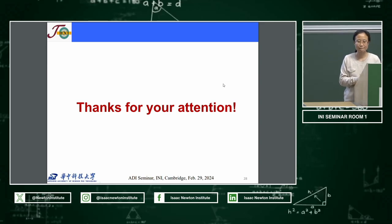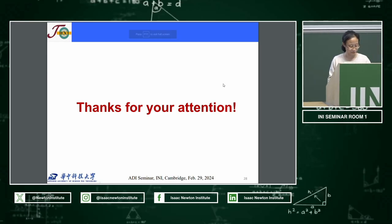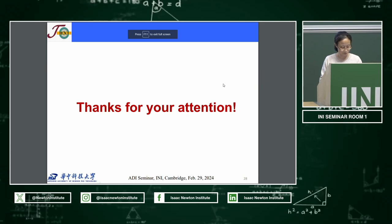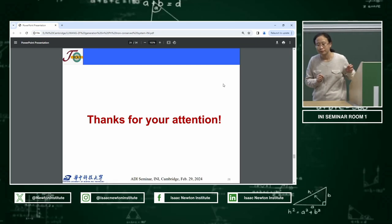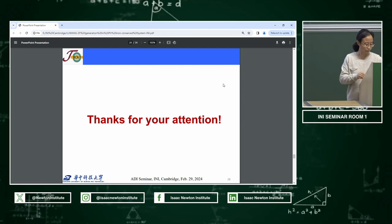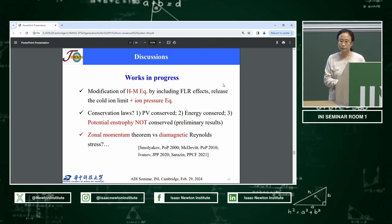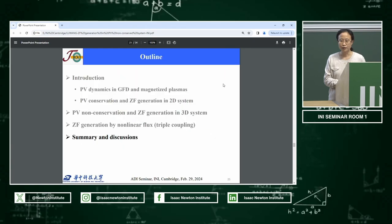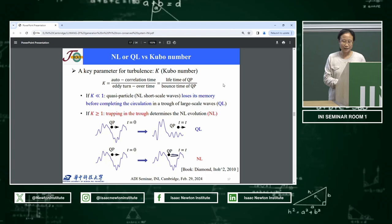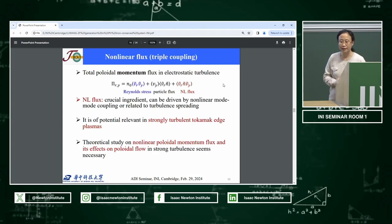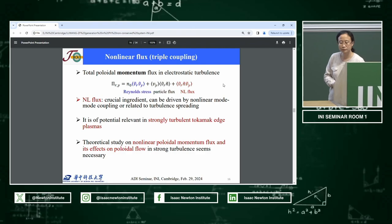Questions and discussion. An audience member observes that both additional terms in the poloidal momentum flux — different from the Reynolds stress — seem related to density fluctuations: one is the particle flux multiplied by v-theta, the other involves three-point correlations with density. The question is raised: would you really drive zonal flows (and not just zonal momentum) with these terms?